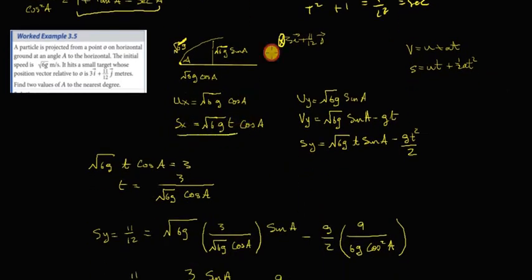This here is your s of x, and this is s of x. So we want root 6g t cosine A is equal to 3 of i. So we get our time in terms of that. So the time when our missile has gone this far in the x direction is equal to t divided by 3, 3 should I say, divided by root 6g cosine A by rearranging this.